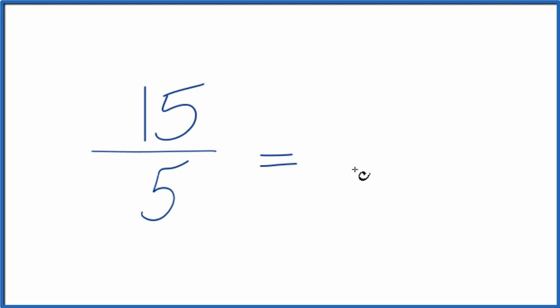And to do that, we need to find a common factor, something that goes into 15 and 5 evenly. I can see right away that 5 would go into 15 and go into itself, 5.